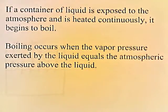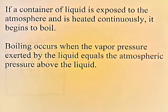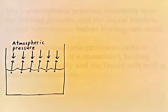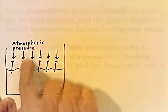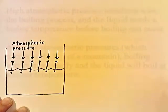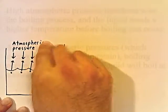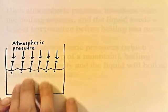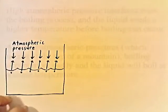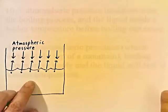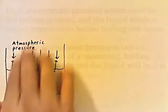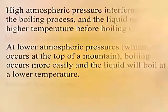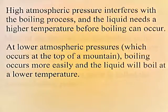If a container of liquid is exposed to the atmosphere and heated continuously, it begins to boil. Boiling occurs when the vapor pressure exerted by the liquid equals the atmospheric pressure above the liquid. You can have evaporation without boiling, but the moment the vapor pressure coming off equals the pressure pushing down, boiling occurs. High atmospheric pressure interferes with boiling, requiring a higher temperature. At lower atmospheric pressures — such as at the top of a mountain — boiling occurs more easily, and the liquid boils at a lower temperature.